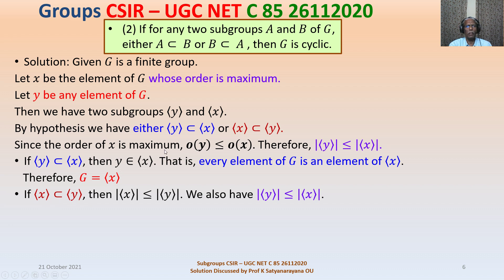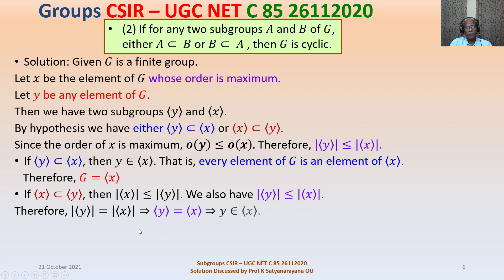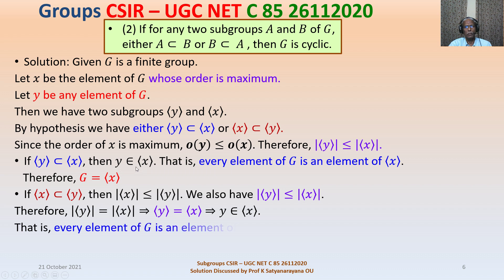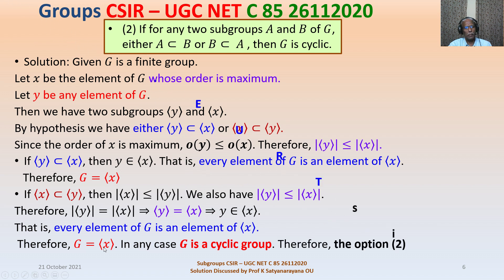In the second case, if ⟨X⟩ is contained in ⟨Y⟩, then the order of ⟨X⟩ ≤ order of ⟨Y⟩. Combined with the earlier inequality, we get order of ⟨Y⟩ equals order of ⟨X⟩, so ⟨Y⟩ equals ⟨X⟩. Again Y belongs to ⟨X⟩, and every element of G is in ⟨X⟩, so G equals ⟨X⟩ and G is cyclic. In any case G is cyclic, so Option 2 is true.